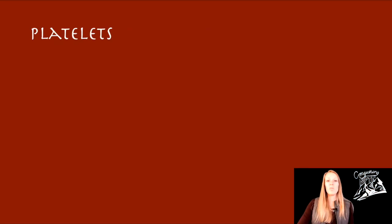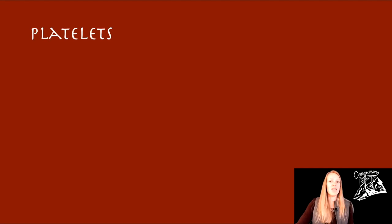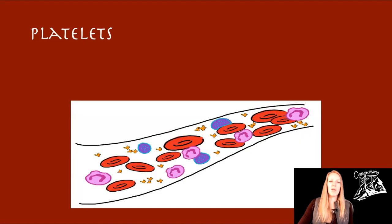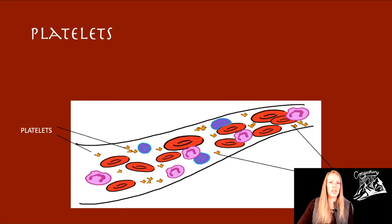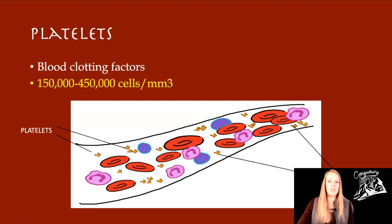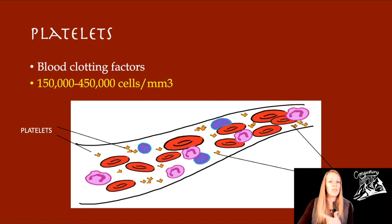Finally, platelets. Thinking about all the elements of blood at one time is helpful — platelets are really small compared to white blood cells and red blood cells. Our normal range is 150,000 to 450,000 cells. Again, why so many? They're really small and they're clotting factors. If you don't have something that requires a big clot to be formed, you'll probably have fewer platelets than if you've cut yourself and need blood to clot. That's why there is such a big range.